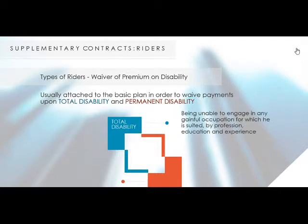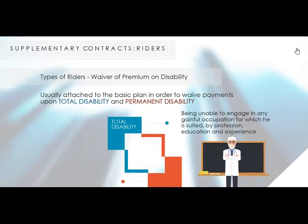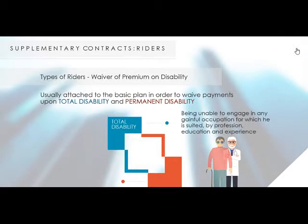For example, a surgeon who has lost his hand can no longer perform operations. He may find employment as a professor in a teaching hospital or university, but because his education, profession, and experience did not prepare him to be a professor, he is then considered totally disabled. Total disability can be automatic in cases of insured individuals with obvious physical impairments, like being blind in both eyes or having lost both legs.